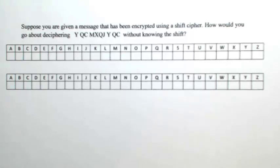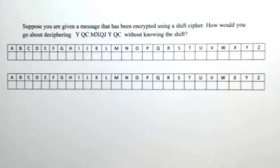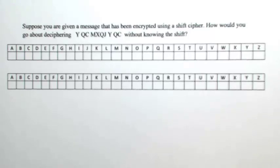Suppose you are given a message that has been encrypted using a shift cipher. How would you go about deciphering it without knowing the shift? We don't know if the letters have been shifted by 3, by 10, by 12 — we have no idea. But what we do know is some basics about the English language: every word contains a vowel, or could contain Y. And any word that's only one letter has to be a word like I or A.